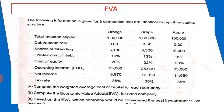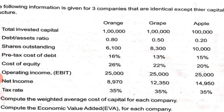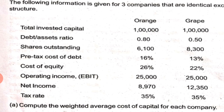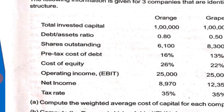We are moving through the stages. Firstly, we are asked with the calculation of weighted average cost of capital. These are the details of three companies: Orange, Grape, and Apple. For calculating weighted average cost of capital, we need the debt-equity ratio — 80%, 50%, and 20%. The pre-tax cost of debt is given, so we need to calculate after-tax cost of debt: 16% into (1 minus tax rate). Cost of equity, EBIT, net income, and tax rate are also given.